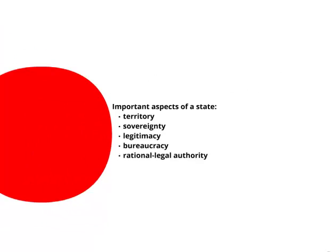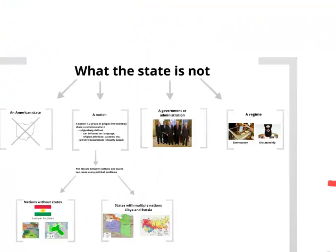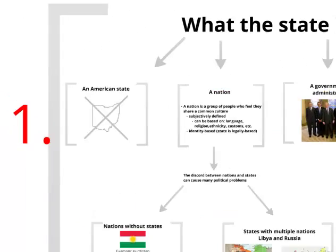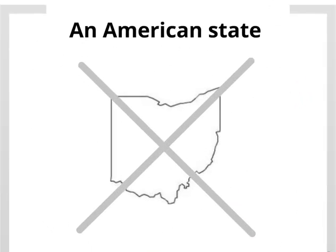First, let's take a quick look at what the state does not mean when we're using it in the context of comparative politics. The first is that it is not an American state. In comparative politics, when we talk about the state, we're talking about something at more of a country level — so we're not talking about California or Ohio or Michigan.